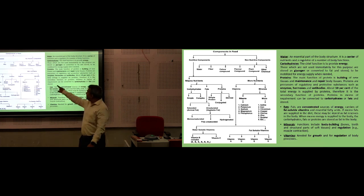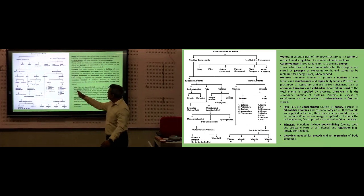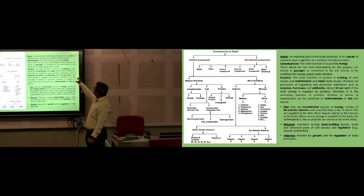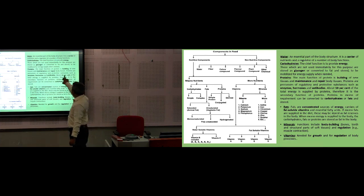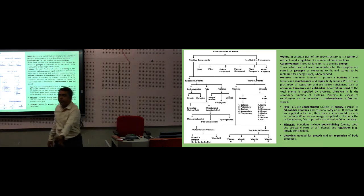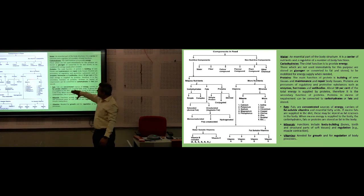Protein — as mentioned — includes simple protein, derived protein, and conjugated protein, which we will see in the next lecture. The main function of protein is building new tissue and maintaining or repairing body tissue. Proteins are made up of a long chain polymer of amino acids joined together by peptide bonds. They are very regulatory and protective substances, essential for enzyme formation, hormone formation, and antibody production. About 10% of total energy in food must be supplied through protein.